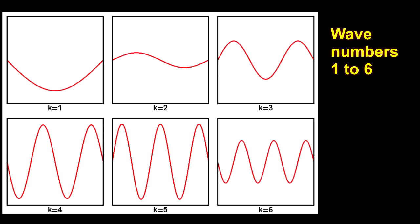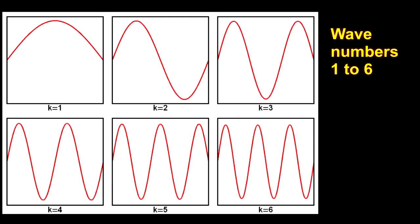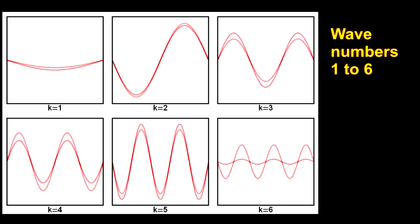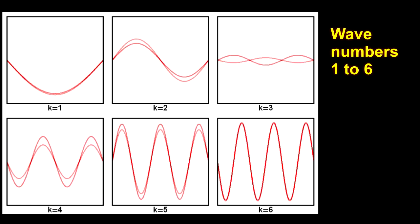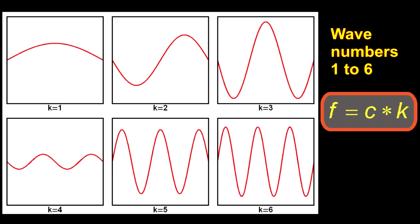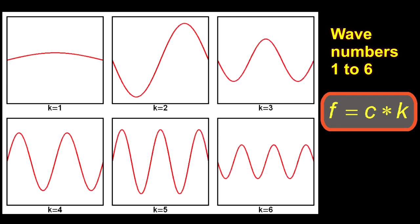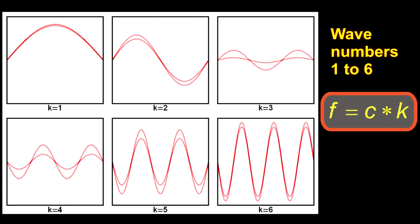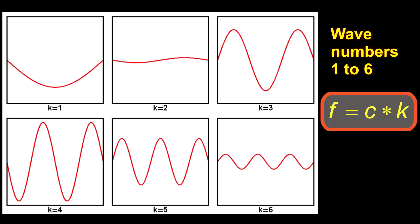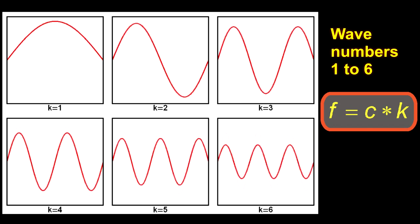Besides the standing wave pattern, you can see that the higher wave numbers go up and down quicker. That behavior is predicted by Maxwell's equations. There is a fixed relationship between frequency and wave number. Max Planck knew this relationship from Maxwell's theory. Later Einstein recognized it as a fundamental principle of the universe and the basis for the special theory of relativity.